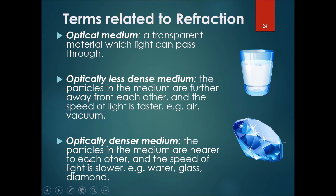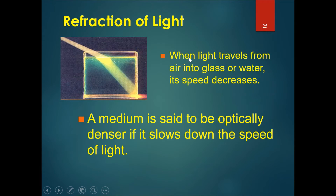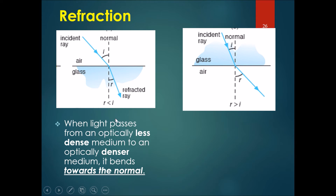An optically denser medium means a smaller angle, as you will learn. When light travels from air into glass or water, its speed decreases and it bends towards the normal. A medium is said to be optically denser if it slows down the speed of light. Air is optically less dense so its angle is larger, while glass is optically more dense so the angle is smaller.